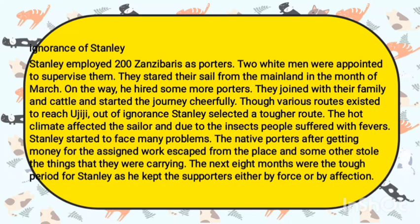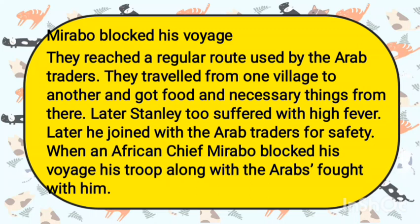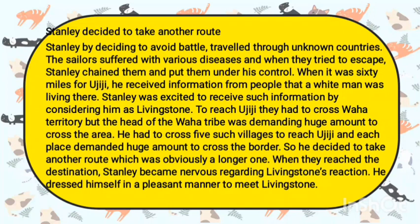Mirabo blocked his voyage. They reached the regular routes used by the herb traders and traveled from one village to another, getting necessary things along the way. Later, Stanley too suffered with high fever. He joined with the herb traders for safety. When the African chief Mirabo blocked his voyage, his troops along with the herb traders fought with him. Stanley decided to take another route, and by choosing to avoid battle, traveled through unknown countries. The sailors suffered with various diseases, and when they tried to escape, Stanley chained them and put them under his control.